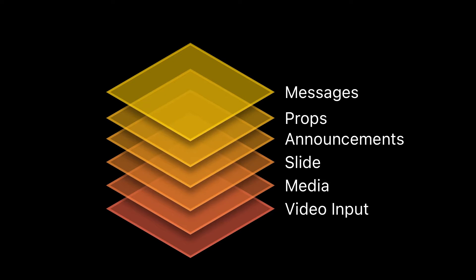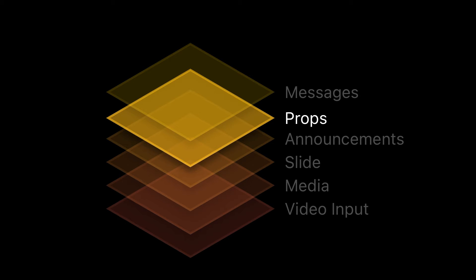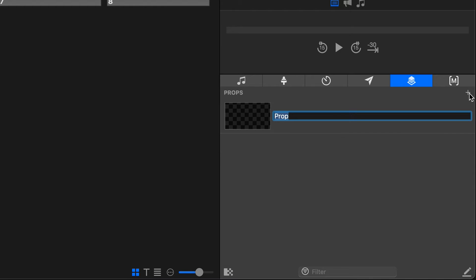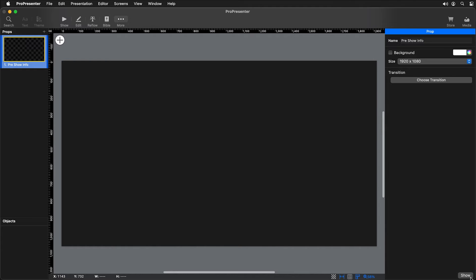Now let's create our pre-show information scroll that could be used with announcement slides or over top live video. We're going to put this scrolling text in a prop, because the props layer is above the announcements layer, presentation layers, and video input layer, and it can be triggered separately — the perfect place for this sort of scrolling text. So let's click on props from show controls and click add to add a new prop. I'll call this 'pre-show info' and then click edit to bring us to the props editor.